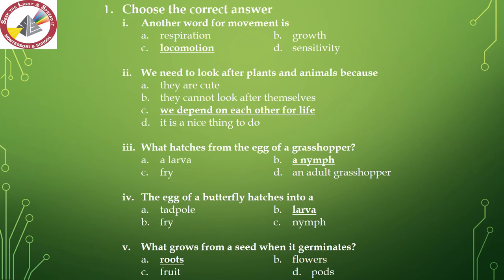Number 2 — we need to look after plants and animals because: they are cute; they cannot look after themselves; we depend on each other for life; or it is a nice thing to do. The correct answer is: we depend on each other for life.